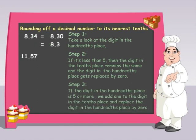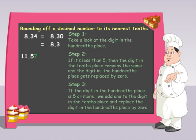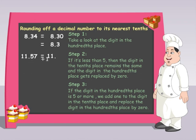If the digit in the tenths place is 5 or more, we add 1 to the digit in the ones place and replace the digit in the tenths place by 0.